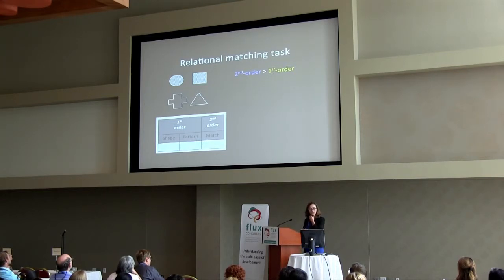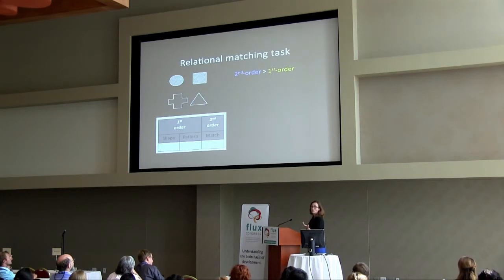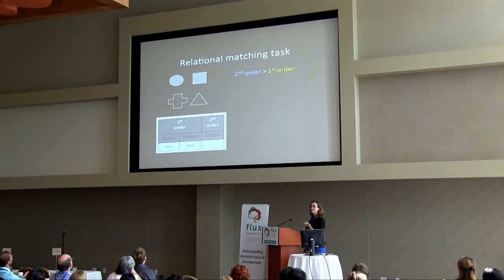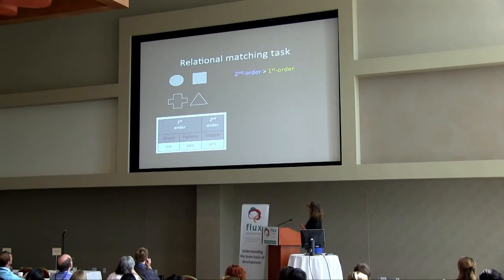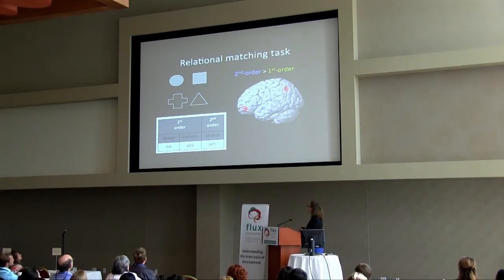This is a relational matching task we've done with these kids. On every trial you see a set of four items on the screen, and I can ask three different questions. First: is there a match in shape between the top two items or between the bottom two? Second: is there a match in pattern? Third — the tricky one: do the bottom two match according to the same dimension as the top two? That's an analogy — a visuospatial analogy. We look at what happens when subjects are engaged in second-order versus first-order problems, and again we see the rostrolateral and inferior parietal lobules.